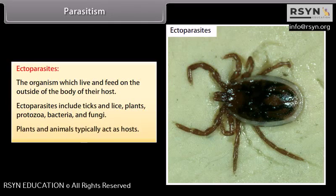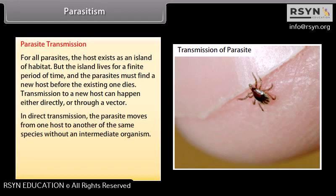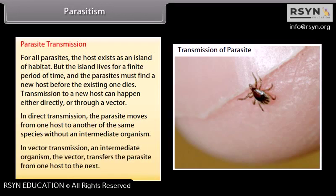Plants and animals typically act as hosts. For all parasites, the host exists as an island of habitat that lives for a finite period of time, so parasites must find a new host before the existing one dies. Transmission to a new host can happen either directly or through a vector. In direct transmission, the parasite moves from one host to another without an intermediate organism. In vector transmission, an intermediate organism transfers the parasite from one host to the next.